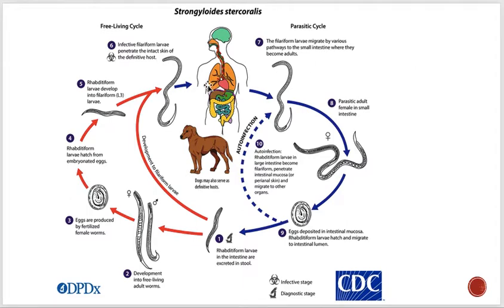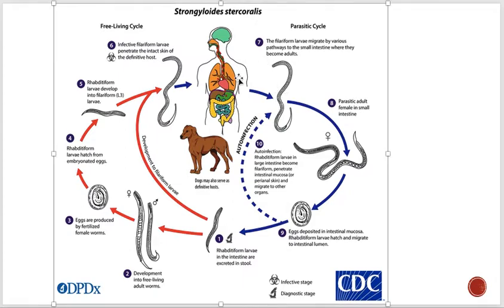Strongyloides stercoralis exists in both a free-living form in the soil and a parasitic form as an intestinal parasite. The female parasites are the longer ones — they are semi-transparent and colorless, and are embedded within the mucosal epithelium of the proximal small intestine, where they keep on laying eggs.